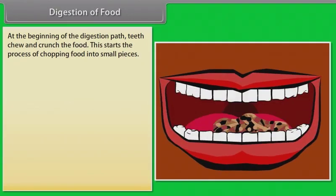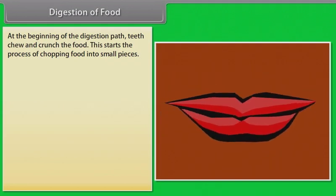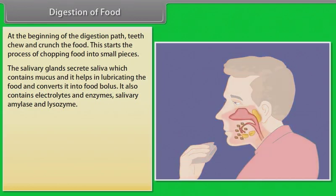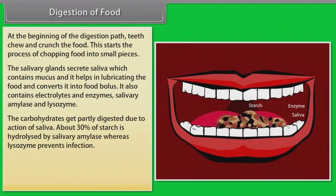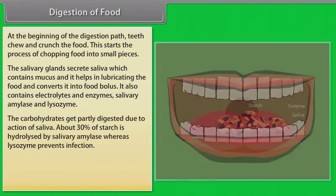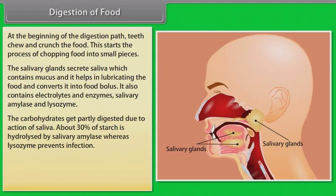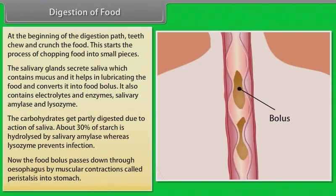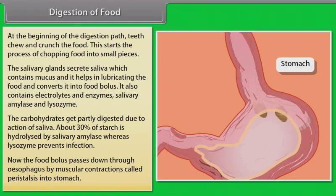At the beginning of the digestion process, teeth chew and crunch the food, chopping it into small pieces. The salivary glands secrete saliva containing mucus, which lubricates the food and converts it into a food bolus. Saliva also contains electrolytes, salivary amylase, and lysozyme. About 30% of starch is hydrolyzed by salivary amylase, while lysozyme prevents infection. The food bolus passes down through the esophagus by muscular contractions called peristalsis into the stomach.